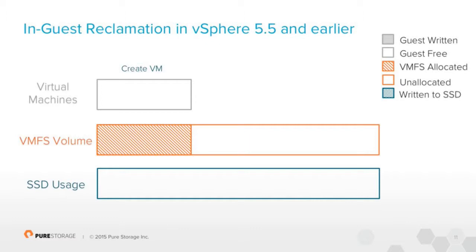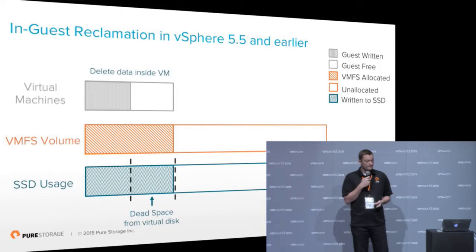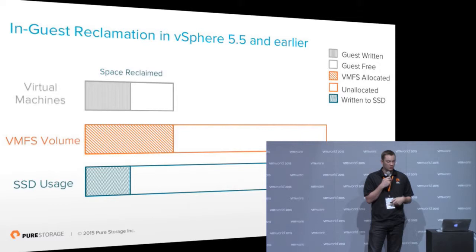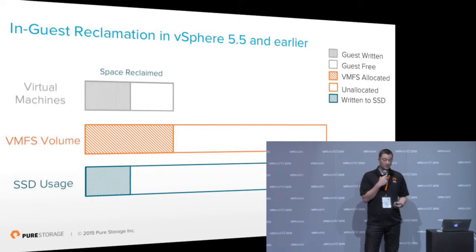So let's look at in-guest reclamation in 5.5 and earlier. We'd create a VM and fill it with data — there's data in the VMDK, the VMFS is used, and the underlying storage is used. If we delete that data inside the VM, what we would do is write zeros to that pre-existing location. Those zeros would be sent down to the array, and then you'd either reclaim those zeros with a manual procedure or they'd be automatically reclaimed as they were written to the array. That allows for some efficiency, but the VMFS is still reporting that as used, though at least the underlying physical storage is cleared up.